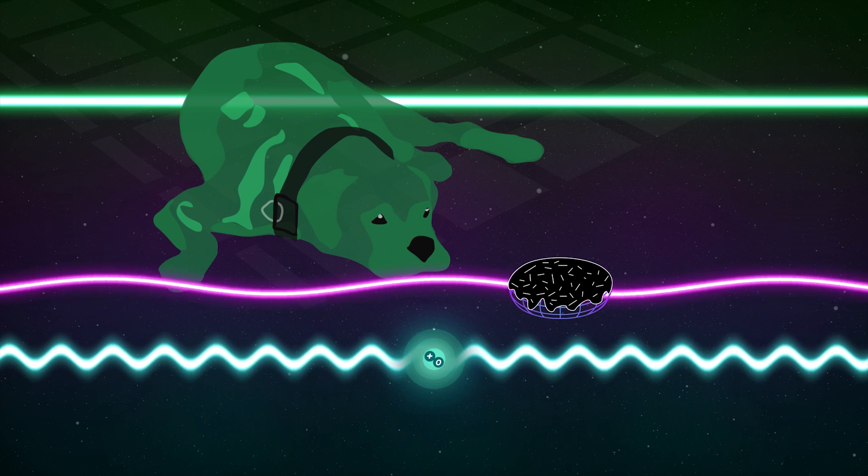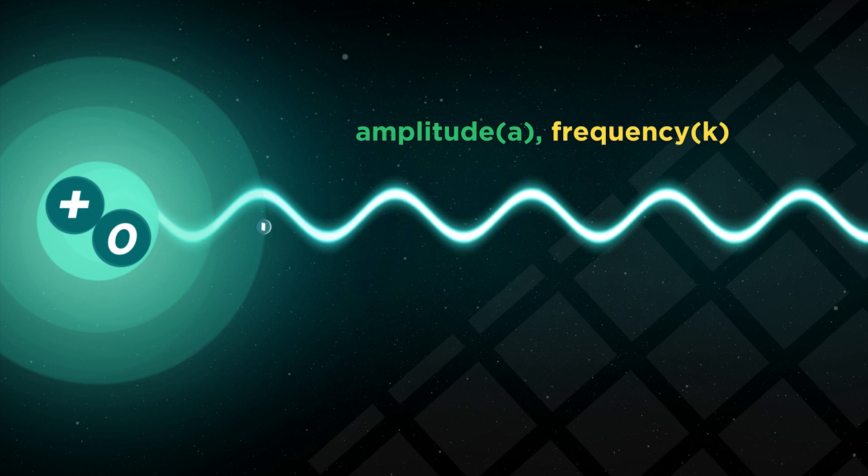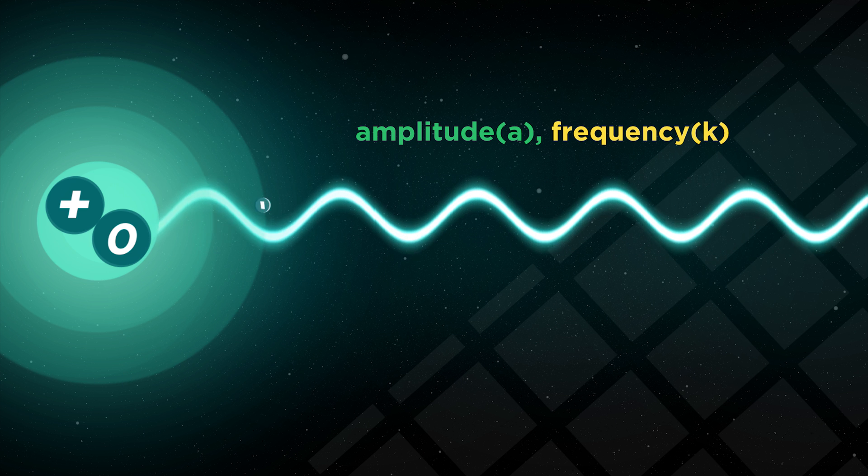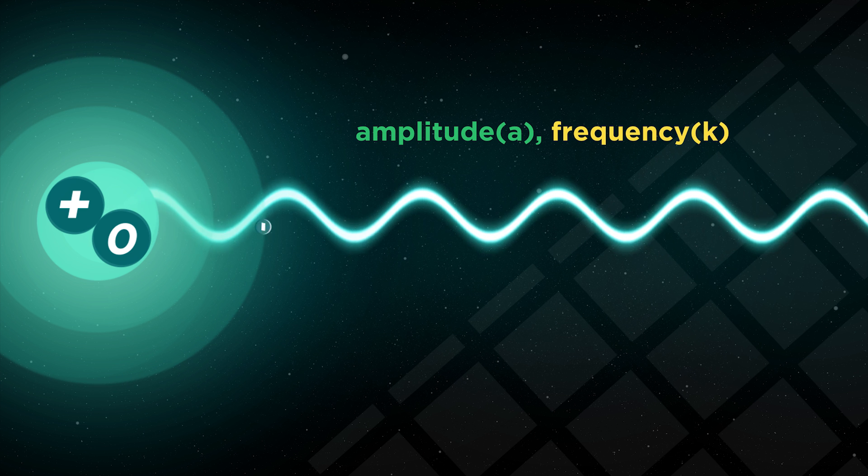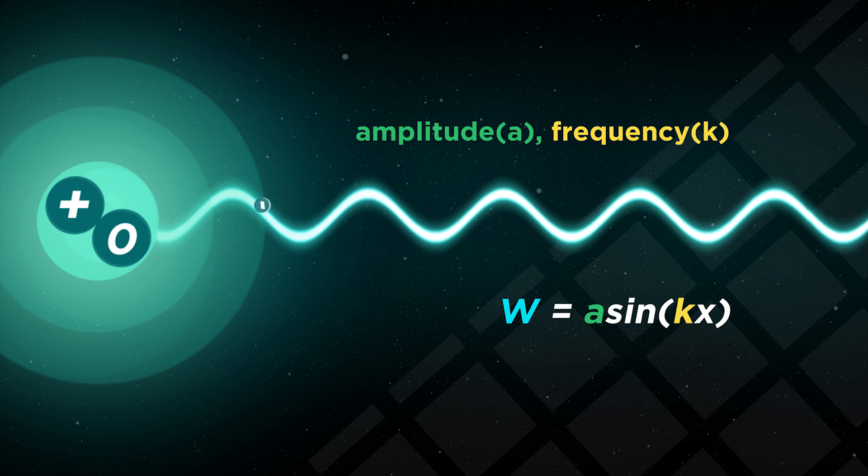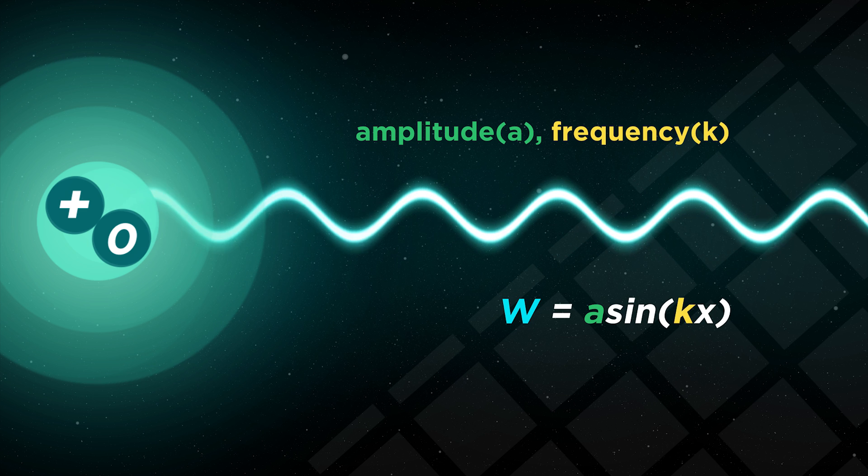In a given period, we get to observe consistent values for amplitudes and frequency. So consistent that we can represent the system we're observing with a simple sine function, w equals a sine kx.